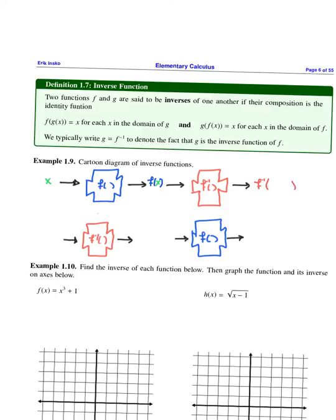And if you feed that output into this red machine, f inverse, then what you get is f inverse of f of x. And the definition of inverse functions says that f inverse is the function that undoes f. So when you compose them, you get the identity, or you just get x.